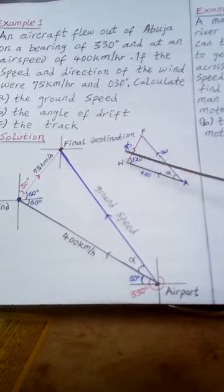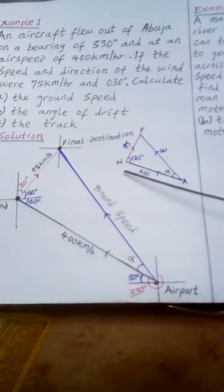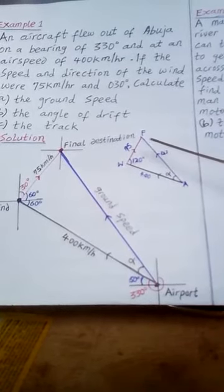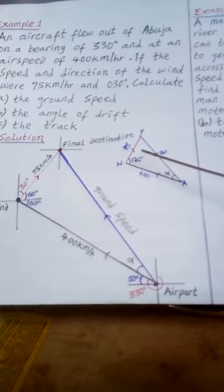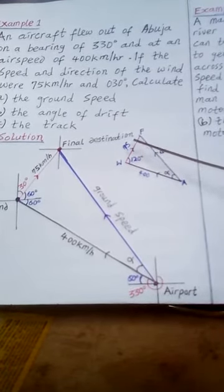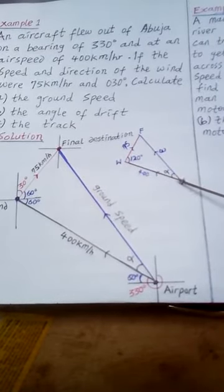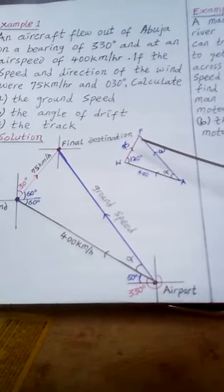We have represented this in a diagram. Please try to study and understand the diagram. Now this is the triangle we got from this diagram. Looking at this triangle, we can see that we have an inner angle of 120 degrees. We have this side giving us 75 km per hour and this side giving us 400 km per hour. And we are looking for W.